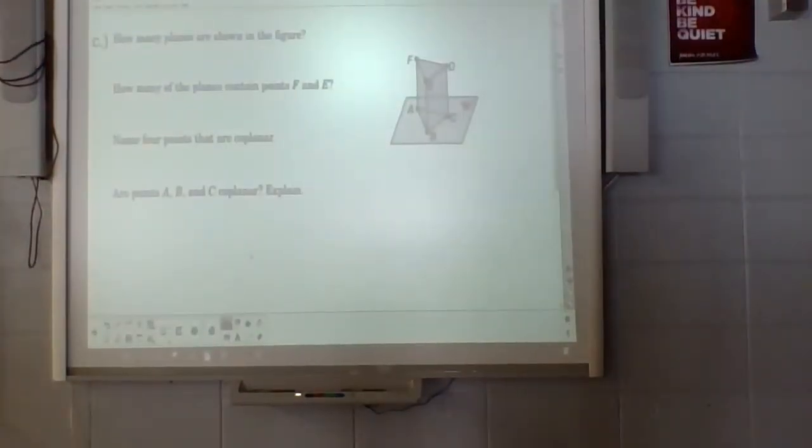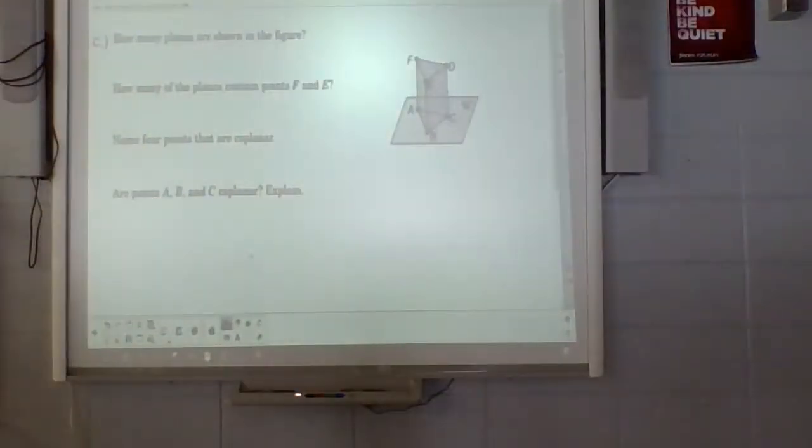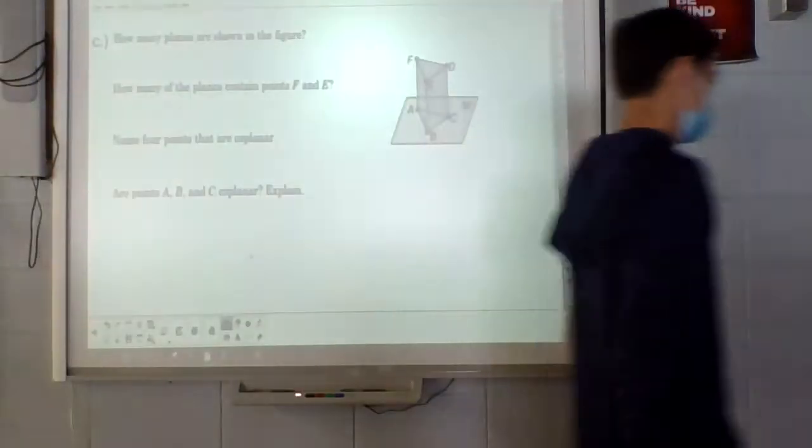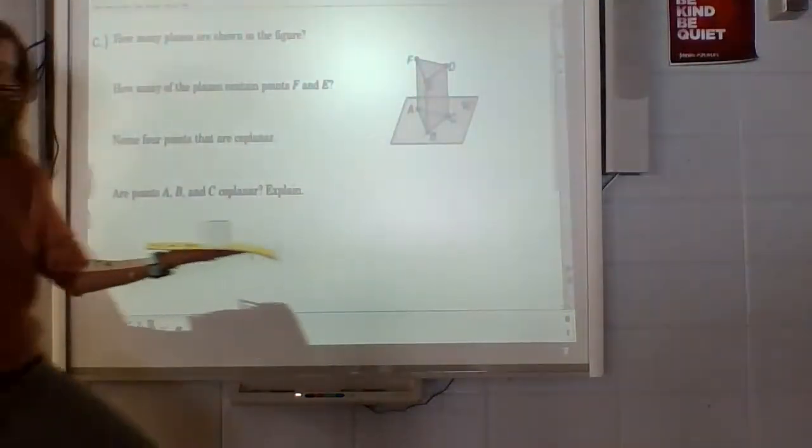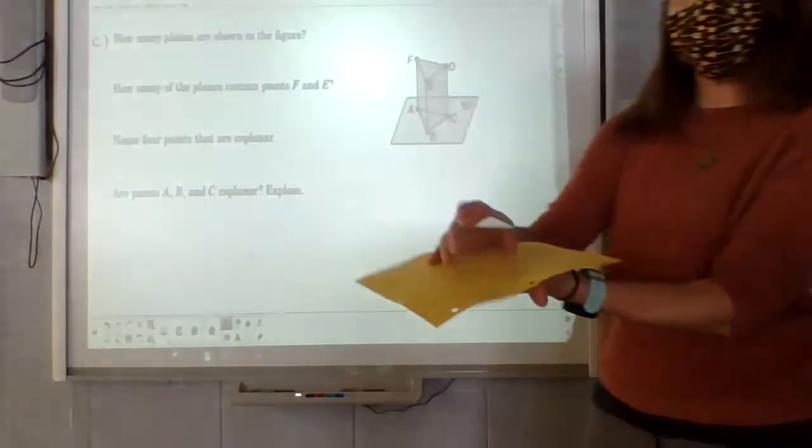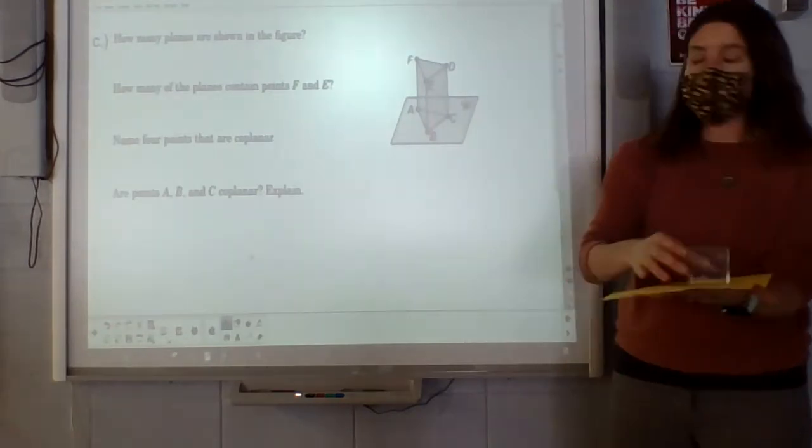I actually have another little visual here for you. This is supposed to look like a plane, and I don't know why they make these clear. There's a plane, and then there's supposed to be this little prism-like thing sitting on top. So this is sitting on top of a plane.